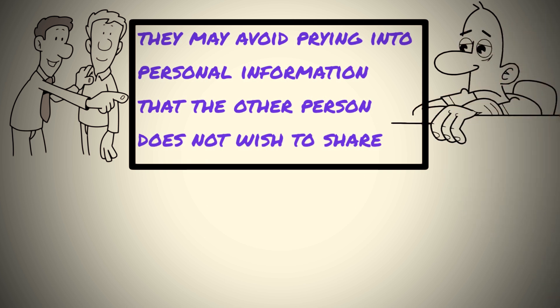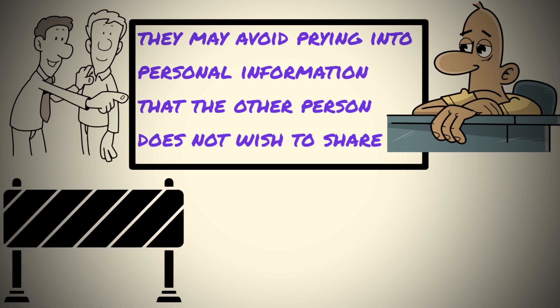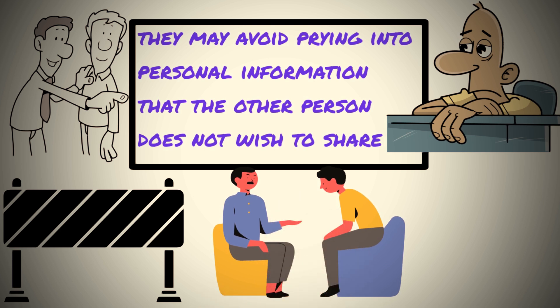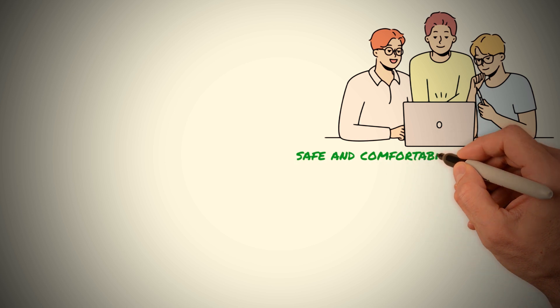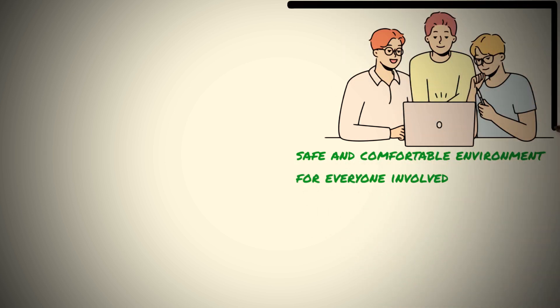When Sigma males respect boundaries, it shows that they value the other person's autonomy and right to make their own choices. It also demonstrates that they understand the importance of trust and respect in a relationship. By respecting boundaries, a Sigma male can help to create a safe and comfortable environment for everyone involved.